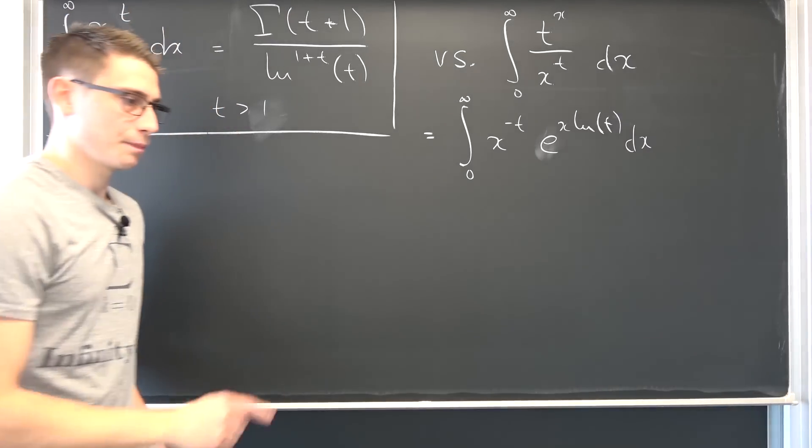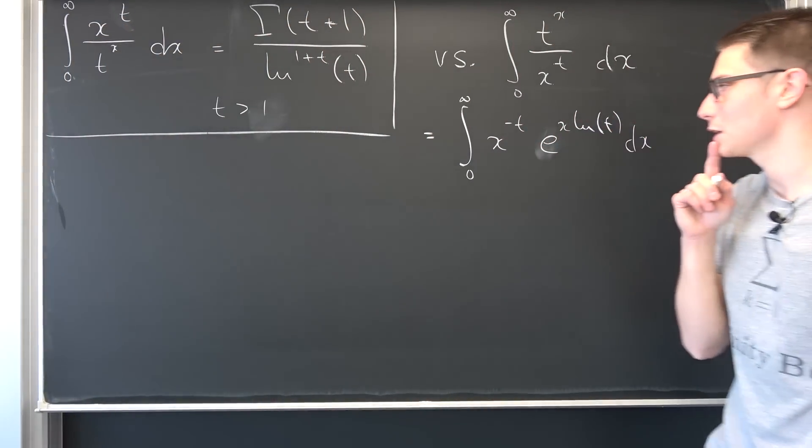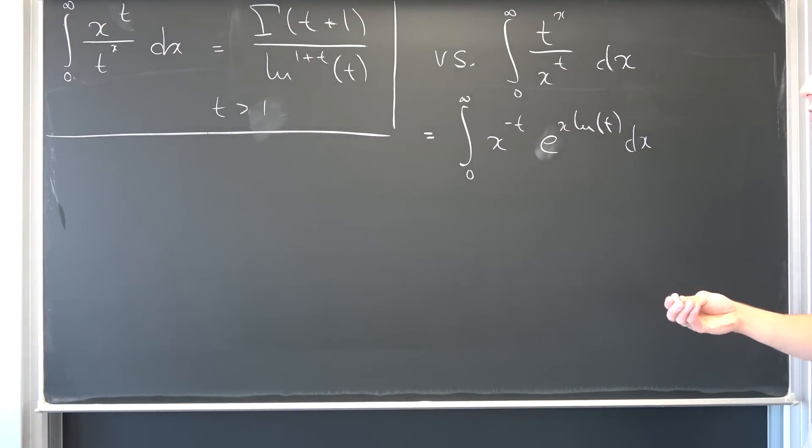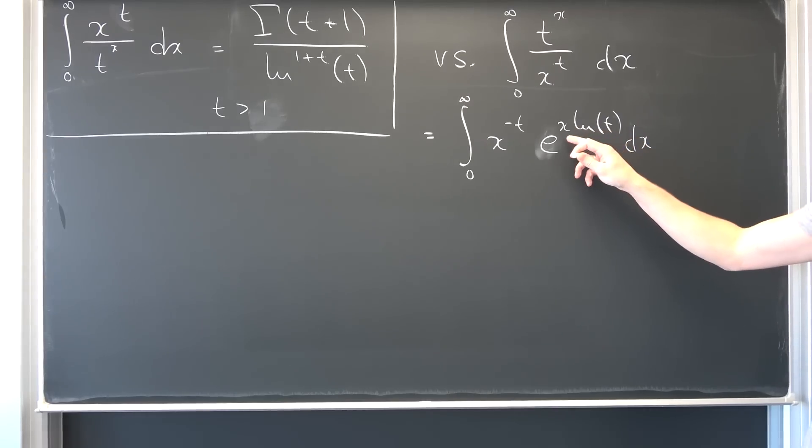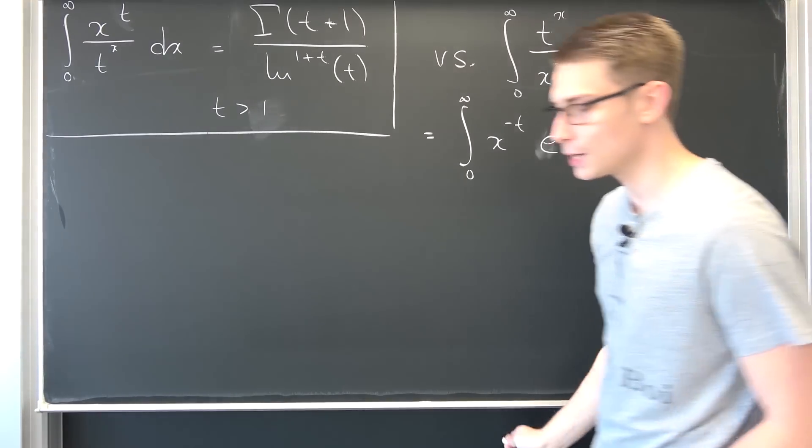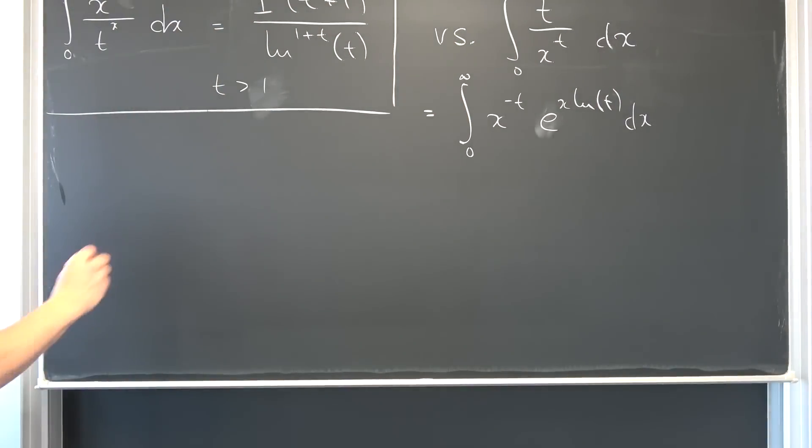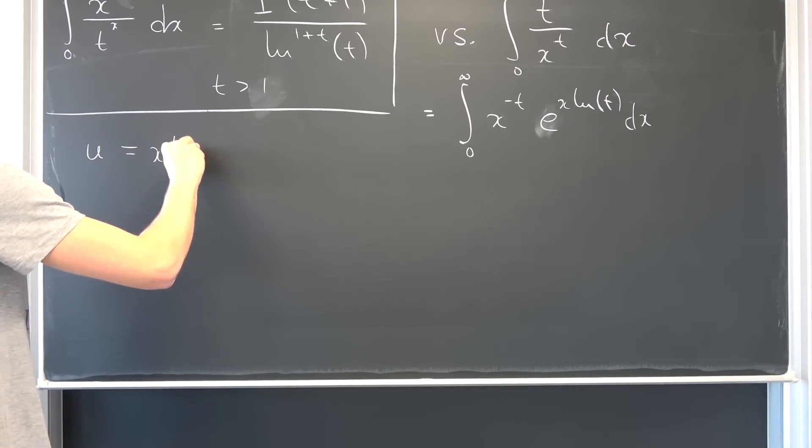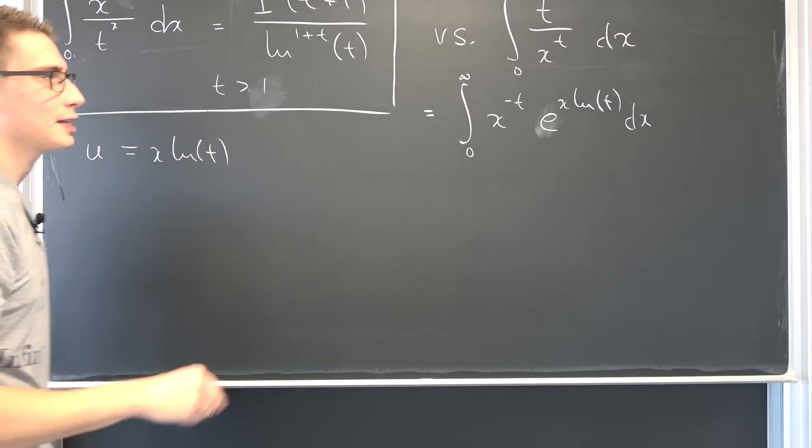Now hear me out, it's going to be with respect to the gamma function yet again. And now by simply introducing the substitution, let u be equal to x times the natural log of t. It's not going to do any good. I'm going to write it out. Let u be equal to x times the natural log of t. Why is this not going to work out?